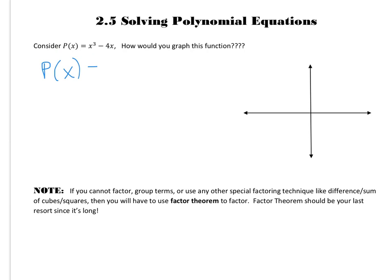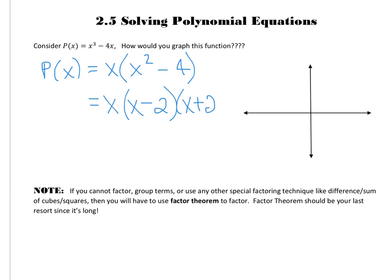It's a nice simple one that happens to have a common factor. And then you can see that that would be a difference of squares. So the x-intercepts would be x equals 0, and 2, and negative 2.